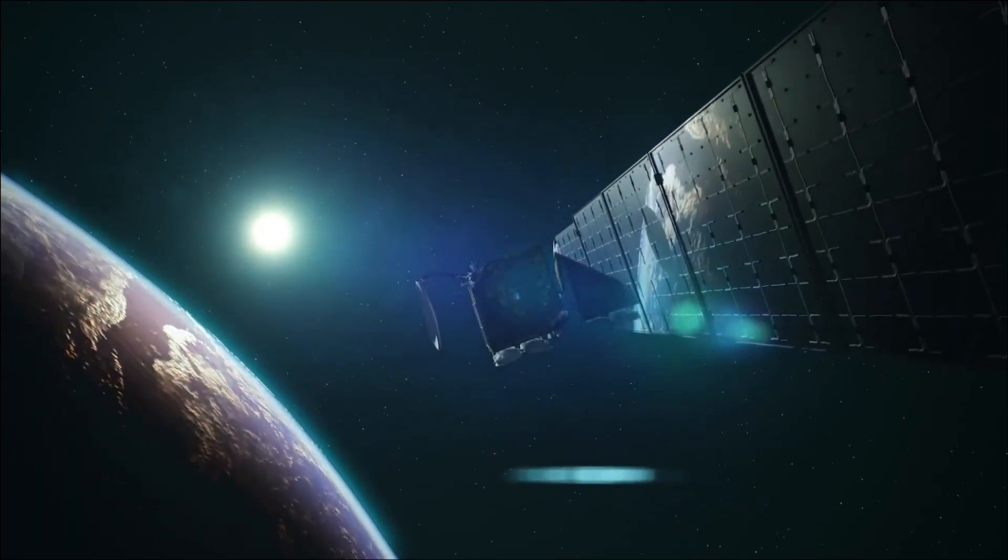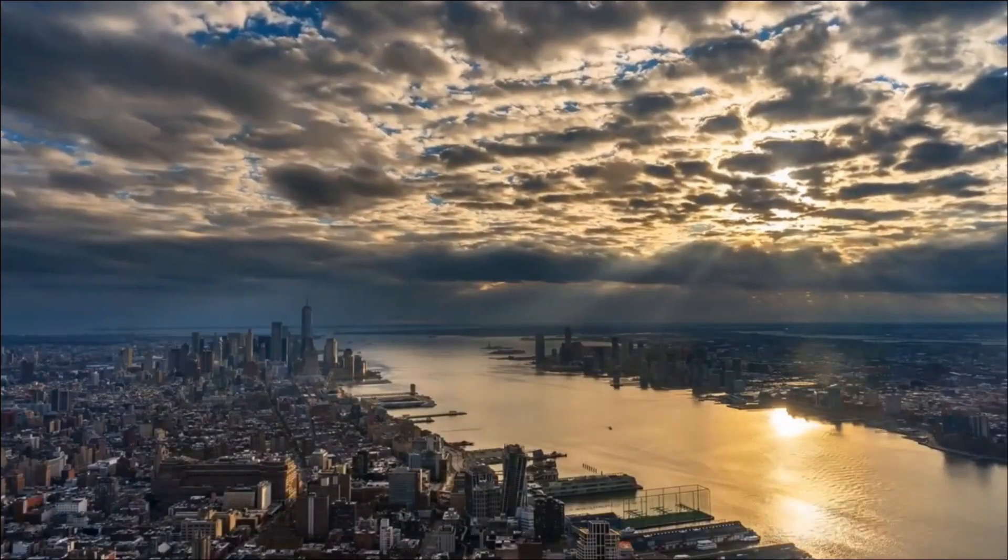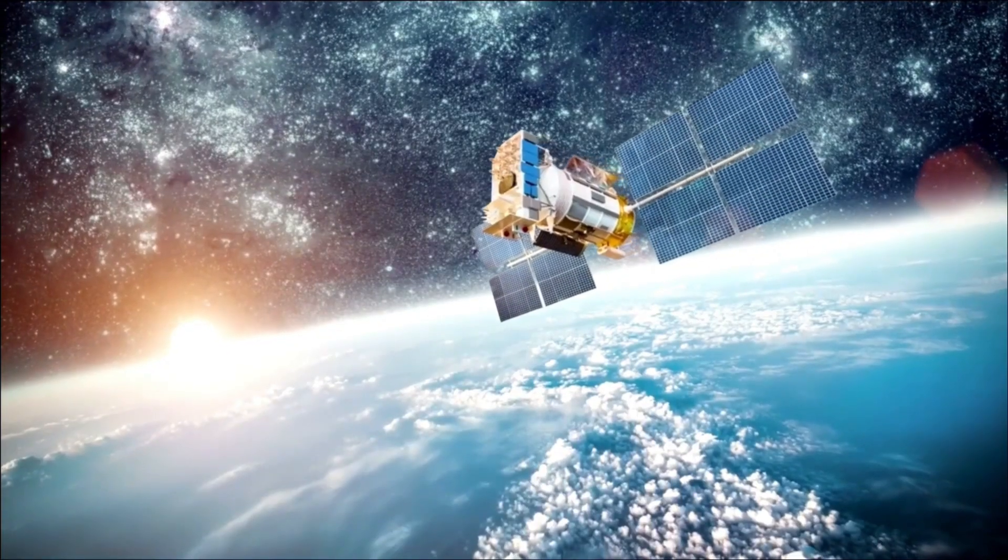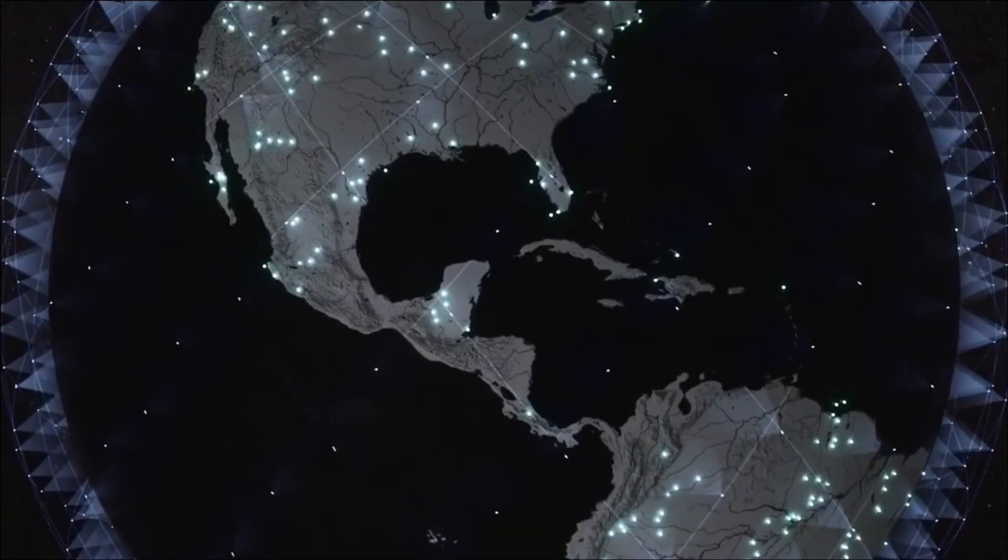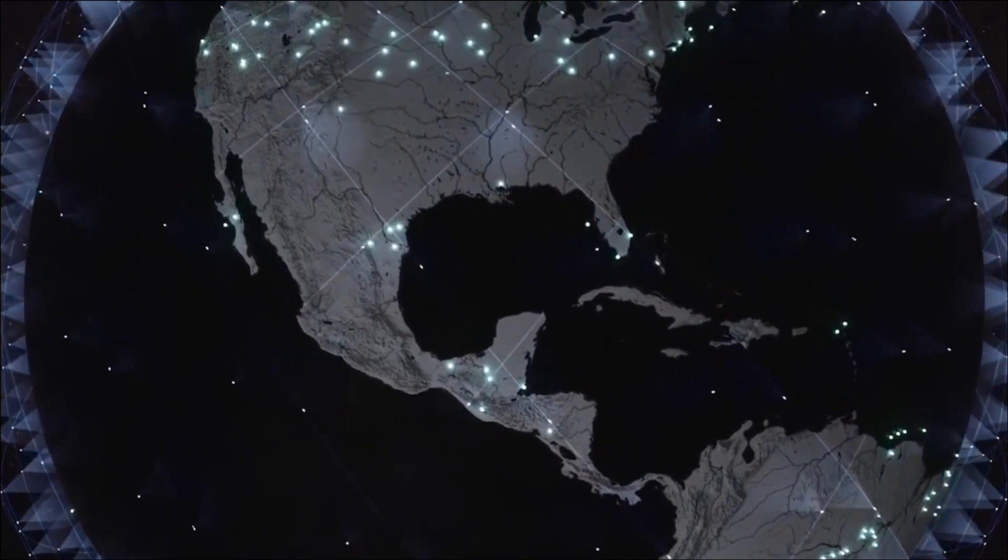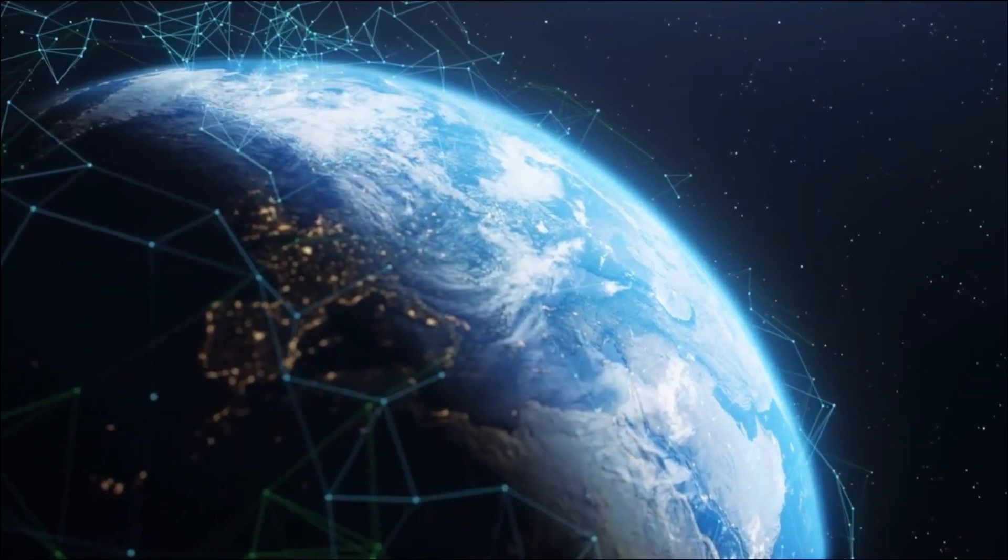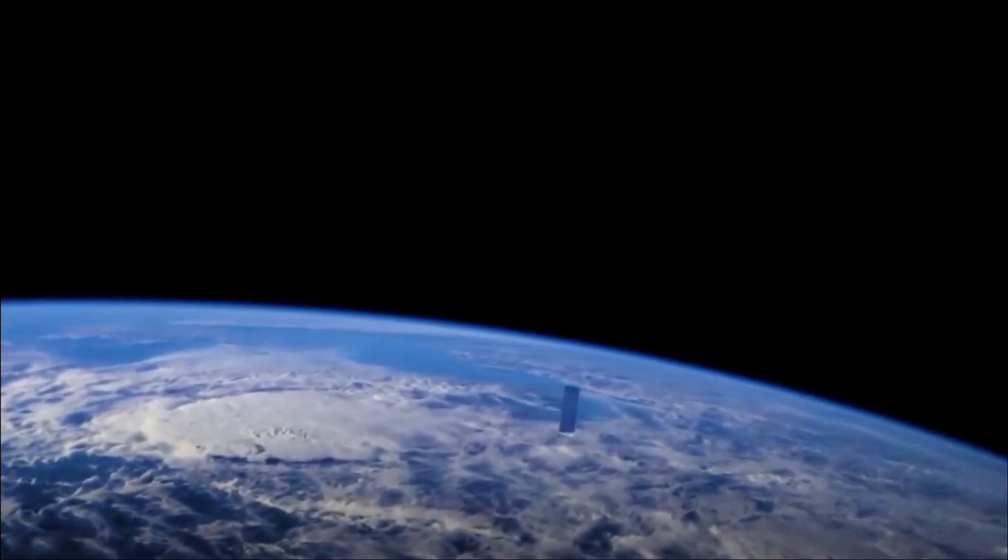However, the first batch of active Starlink satellites didn't arrive in the lower Earth orbit until four years later in 2019. Since that momentous launch, the company has achieved remarkable success, embarking on numerous missions, and deploying over 4,200 Starlink satellites in the lower Earth orbit as of June 2023. This might seem like a small number, but it's actually significant, especially if you compare it to the total number of satellites in space.